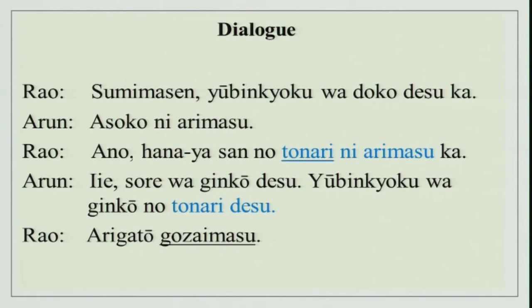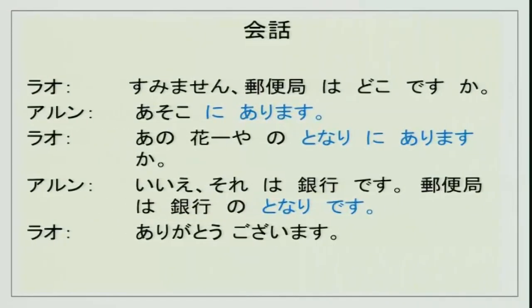Sumimasen you already know. Yuubinkyoku wa doko desu ka? — doko is the interrogative word meaning where. Asoko ni arimasu — it is present over there. Ano hanaya no tonari ni arimasu ka? — Is it next to the flower shop? Iie — No. Sore wa ginkou desu — that is a bank. Yuubinkyoku wa ginkou no tonari desu — the post office is next to the bank. Arigatou gozaimasu.